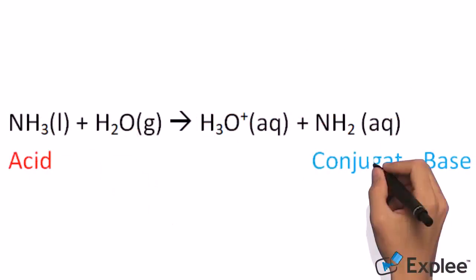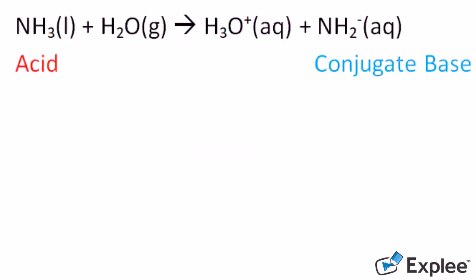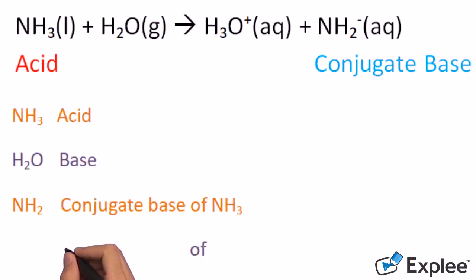The conjugate base of an acid is the acid that donated, therefore lost a proton, thus becoming more negative. In this case, ammonia or NH3 is the acid that divided a lost hydrogen proton to the water molecule, producing hydrogenated water and NH2 minus.